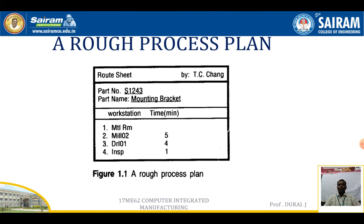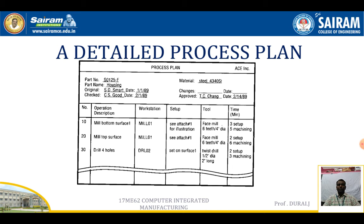In the detailed process plan, it includes the operation, which workstation it has to be done at, what kind of tool is used, the cycle time, who prepared the process plan, who approved the process plan, and the dates. These are all the things placed in the detailed process plan.